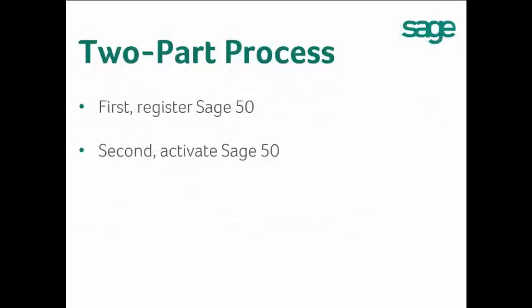Activation is a two-part process. First, you register your software with Sage. Second, you enter your Sage 50 software information to activate the program.